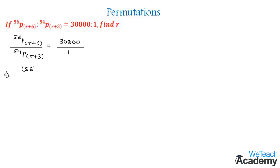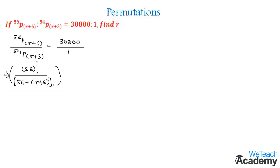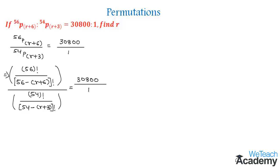We get this as 56 factorial divided by (56 minus (r+6)) whole factorial, and by applying the formula in the denominator, we get 54 factorial divided by (54 minus (r+3)) factorial, all equal to 30800 divided by 1.